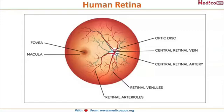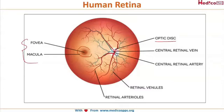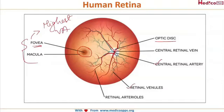When you look at the eye through the pupil with a direct ophthalmoscope or with a 90D lens, the most obvious structure you will see is the optic disc — the point of entrance of the optic nerve into the eye. To the left of the optic disc is the fovea and the macula. The macula is the whole area, and the central region is called the fovea, which has the highest visual acuity. You will also see the central retinal artery, retinal venules, and retinal arterioles.